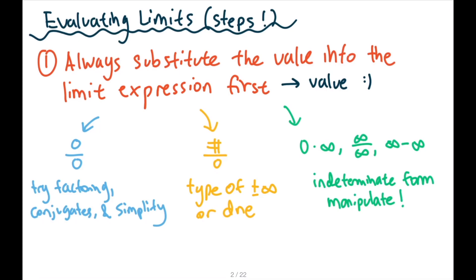So how do we evaluate limits? What are the steps? Number one, we always have to substitute the value into the limiting expression first. When we're lucky, we immediately just get a number. But a lot of times that is not the case — we might get zero over zero. When that happens, it means there is a value to this limit; it's just that we can't find it through substitution.